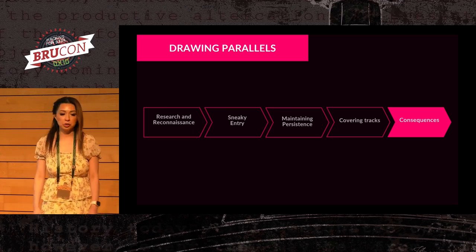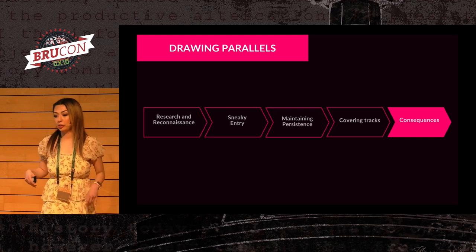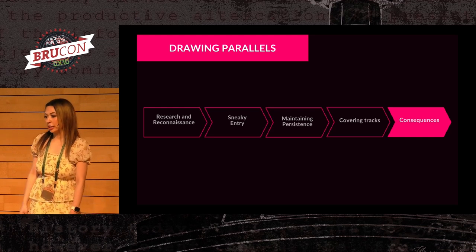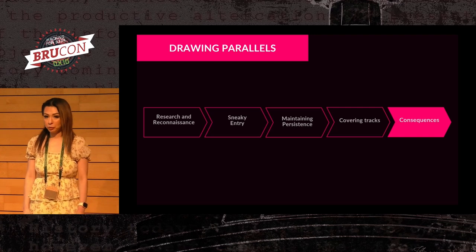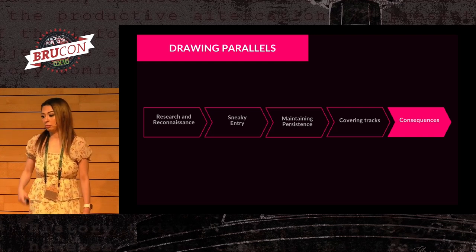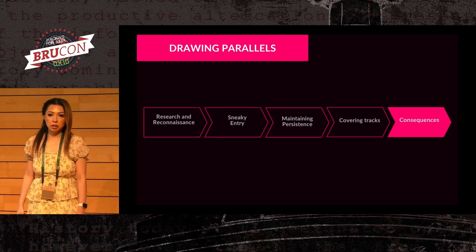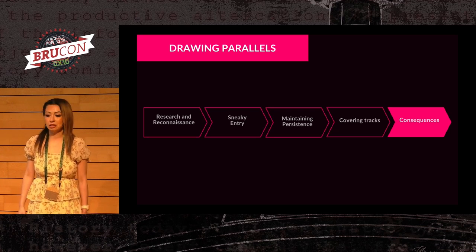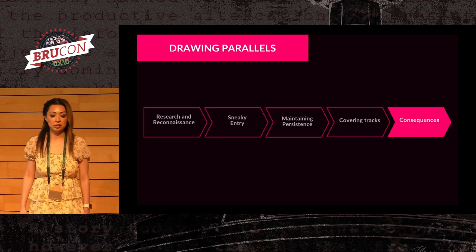When it comes to covering their tracks, they were really not the brightest, which is what eventually got them caught. If we think about this, the way these people operated doesn't really differ much from how an IT attacker would operate. For research and reconnaissance, they use publicly available tools such as Shodan, Google Dorks, Censys, or even LinkedIn — and that's how they target people.